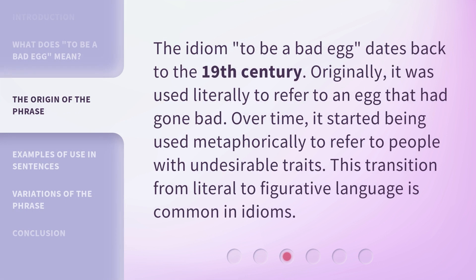The idiom 'to be a bad egg' dates back to the 19th century. Originally, it was used literally to refer to an egg that had gone bad. Over time, it started being used metaphorically to refer to people with undesirable traits. This transition from literal to figurative language is common in idioms.